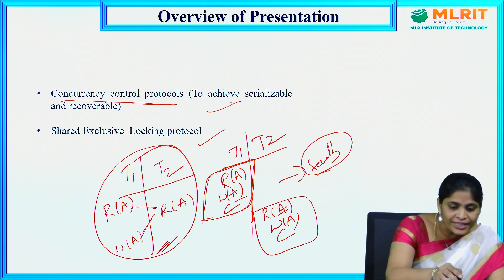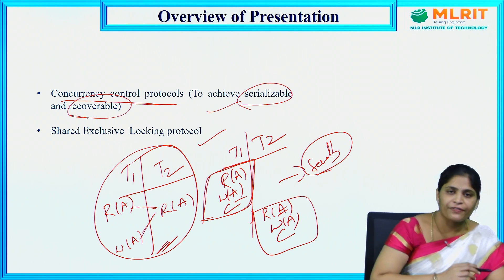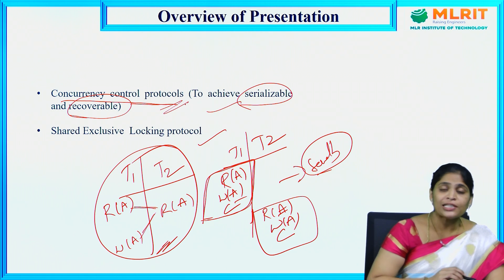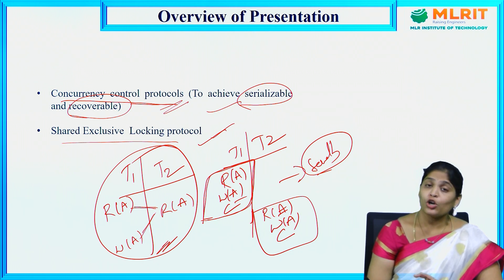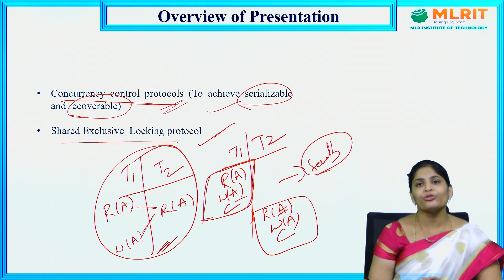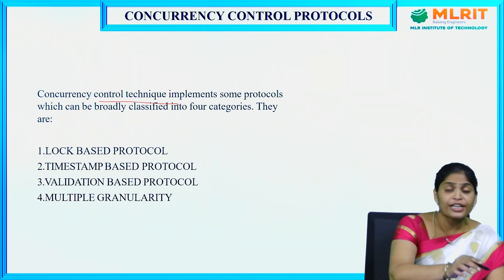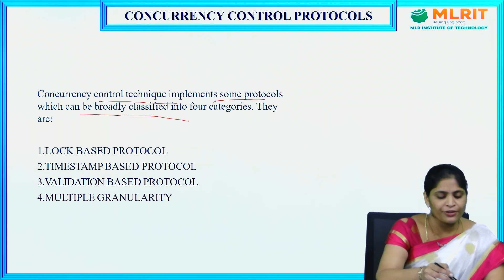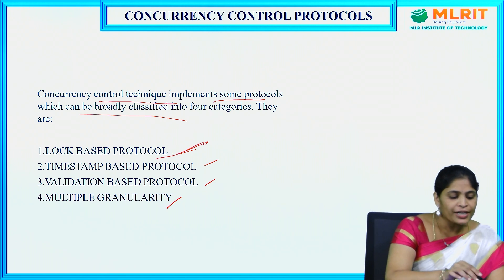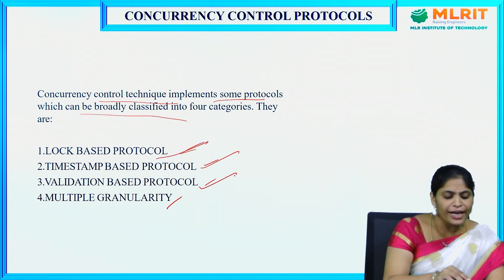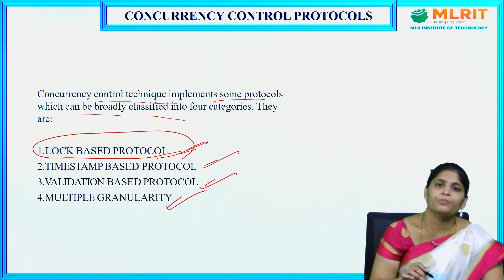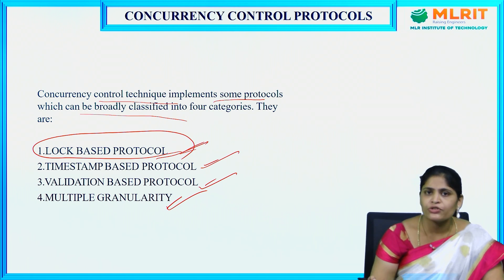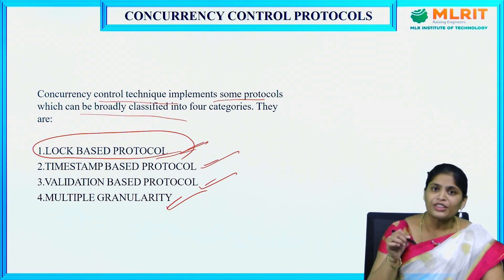The purpose of concurrency control protocols is to achieve serializability and recoverability. One of the protocols is the shared-exclusive locking protocol, which is one of the lock-based protocols. Concurrency control techniques implement protocols broadly classified into four types: lock-based protocol, timestamp-based protocol, validation-based protocol, and multiple granularity. Today I am going to discuss only the first topic — lock-based protocol — and within it, specifically the shared-exclusive locking protocol.